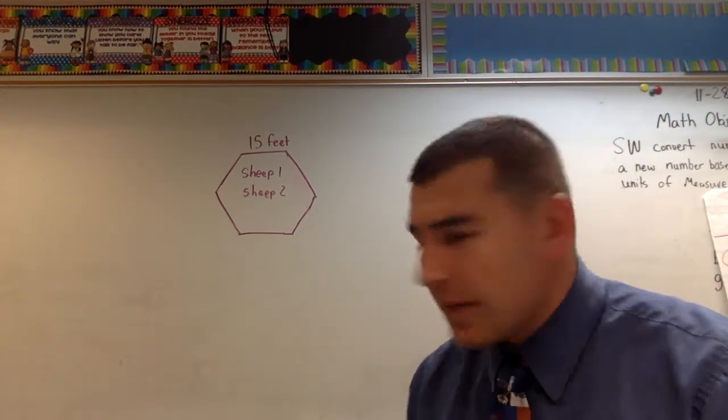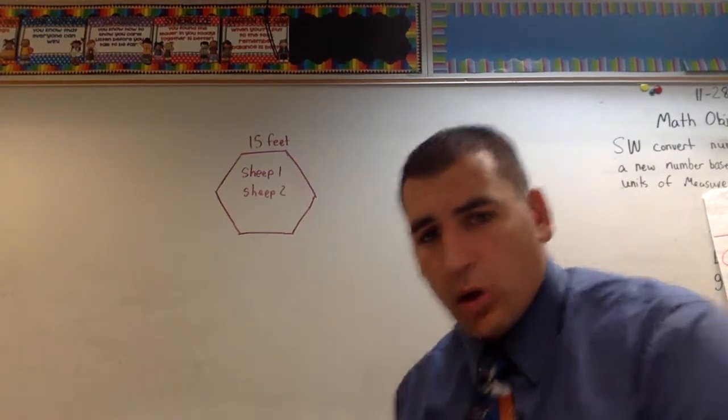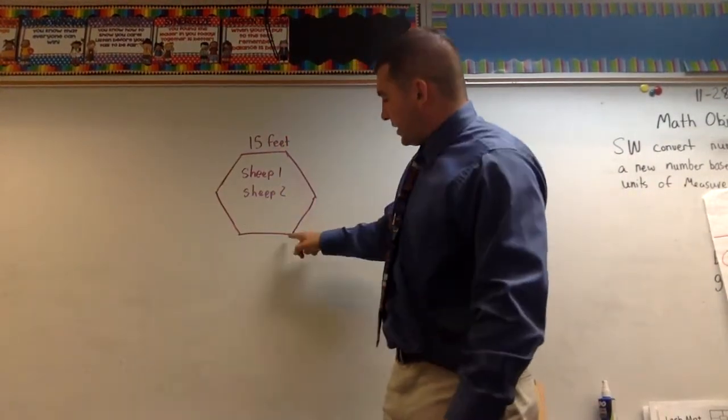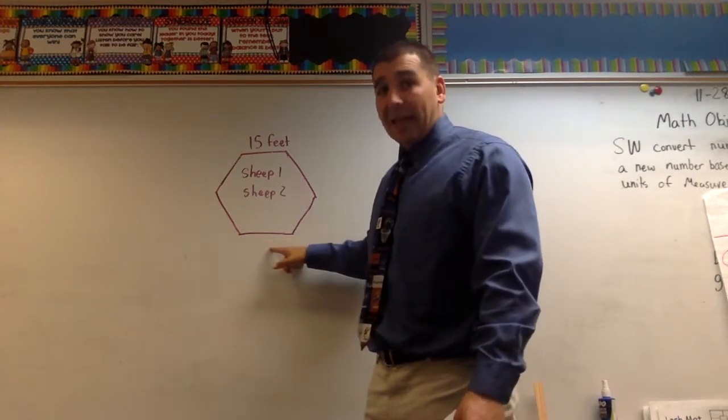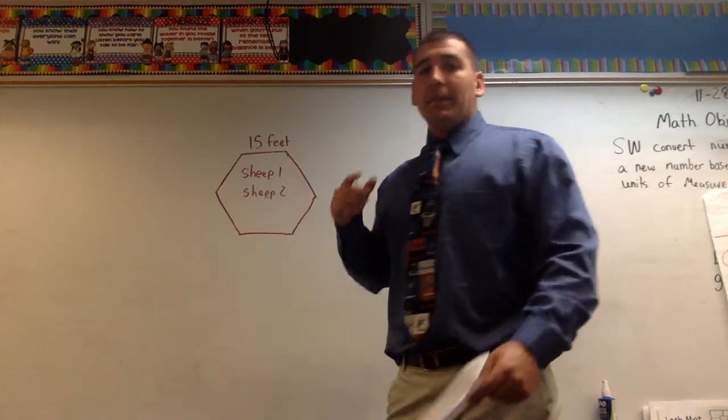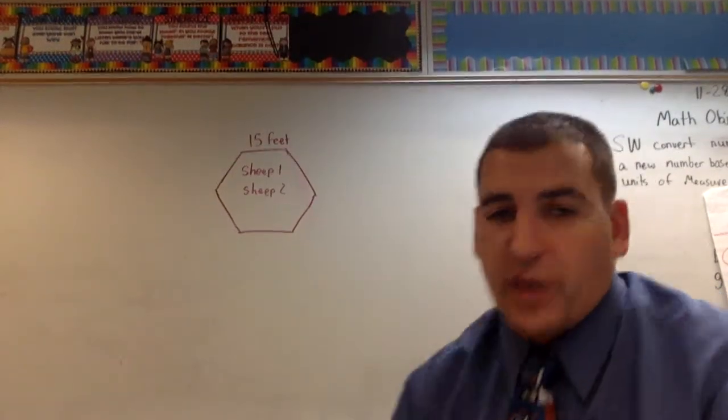What does that mean? Does that mean every single side, all of these, all need to be 100? No, this isn't the perimeter. That's just a side line. The perimeter is the whole outside. That means the whole outside needs to be at least 100 feet, okay?